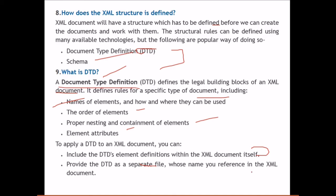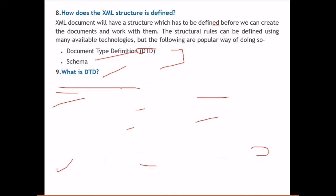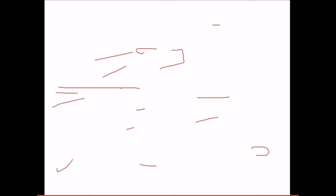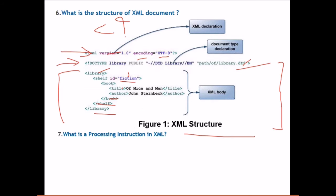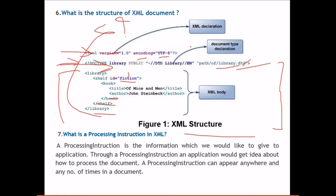In the example we saw, the DTD is referenced by embedding its file path in the XML document — not truly embedded, but the path is being directed to an external DTD file.